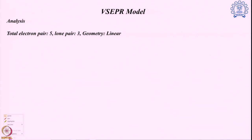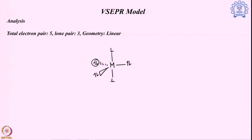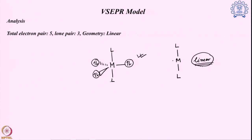In the case of five electron pairs with three lone pairs, the three lone pairs all sit in the equatorial plane where they can maintain maximum distance from each other. Moving one to an axial position would introduce a 90-degree lone pair–lone pair repulsion. With only two bond pairs in the axial positions, the structure — when drawn without lone pairs — looks like a linear molecule.